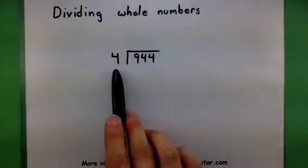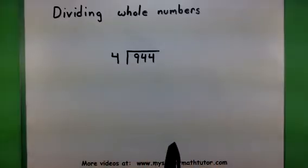The way this is going to work is we're going to take the 4, divide it into 944, but do it just one number at a time. Let's see how this works.